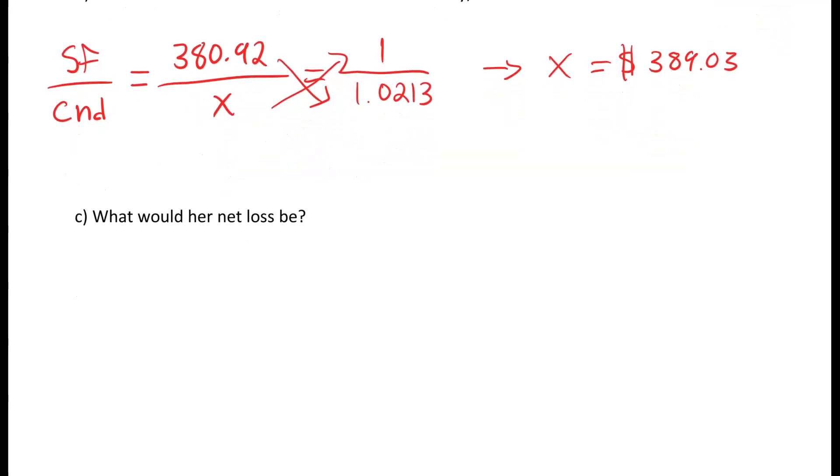That's our next part of the question: what would her net loss be? Well, she started with $400 Canadian and now only has $389.03. So $400 minus $389.03 gets you $10.97 that she lost.